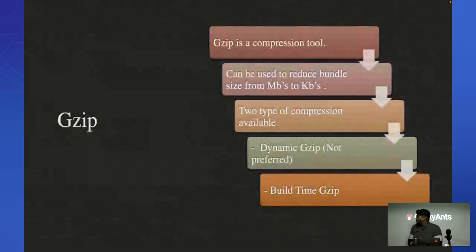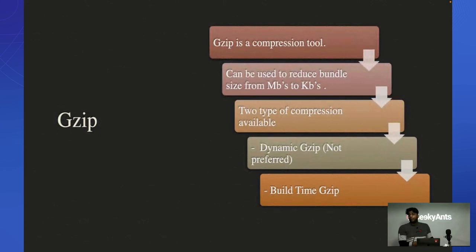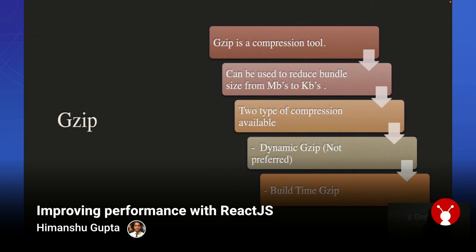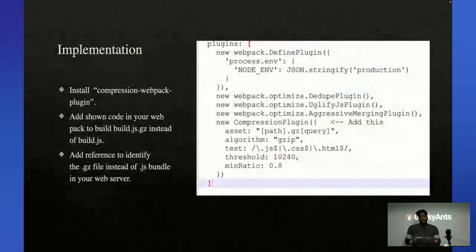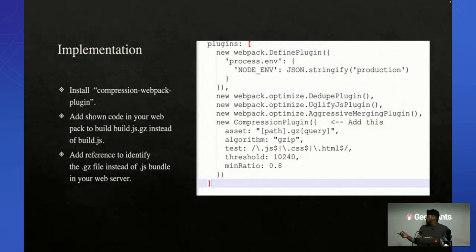Another topic to cover is GZip compression. The bundle size of a project is generally quite large — seven to eight MBs. GZip is a tool we can use to compress it down to KBs. You just have to add its reference in your Webpack config, then add one line of code to tell your server to serve the .gz files it generates instead of the regular bundle.js file. You can zip your images, your bundle files, and your CSS files with this tool.